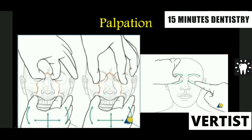Unlike the mandible where you can palpate the lower border for a step deformity, for the maxilla you need to run your gloved fingers along the infraorbital rim and supra-orbital rim to check for step deformity. You also need to push your finger inside the upper vestibule to find if there is any fracture of the zygomatic buttress, which indicates a midface fracture.